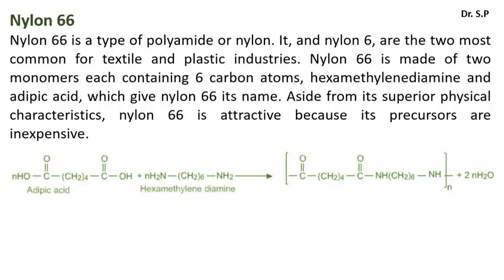Nylon-66 is a type of polyamide or nylon. It, and nylon-6, are the two most common for textile and plastic industries. Nylon-66 is made of two monomers each containing six carbon atoms, hexamethylenediamine and adipic acid, which give nylon-66 its name.